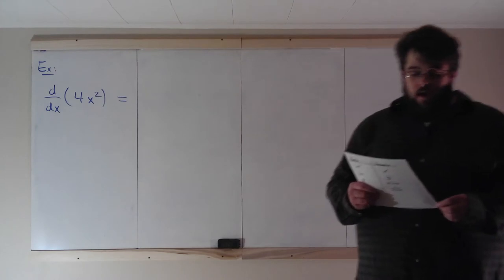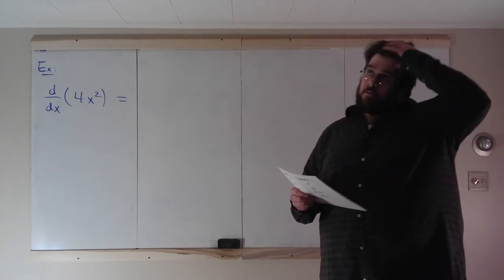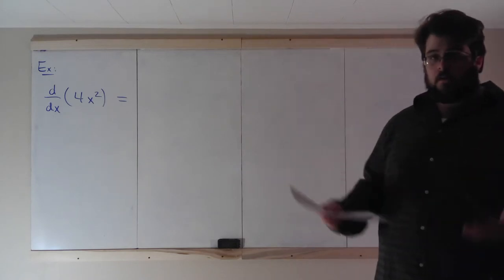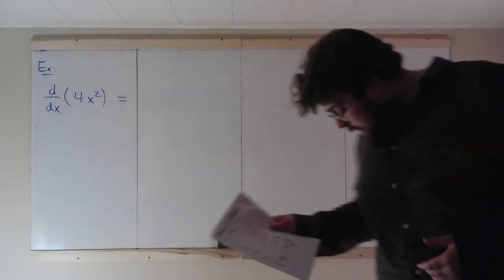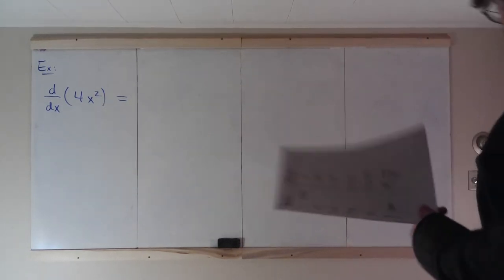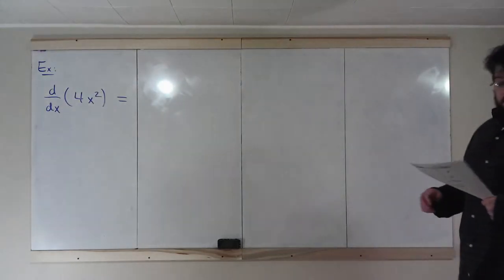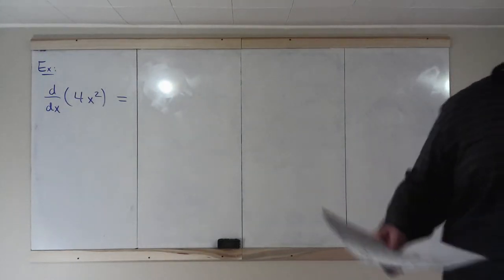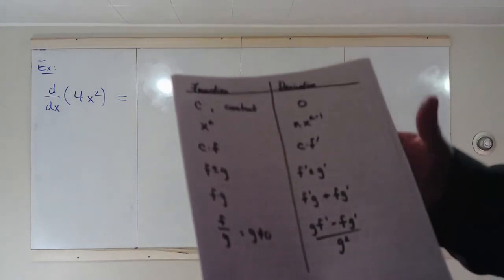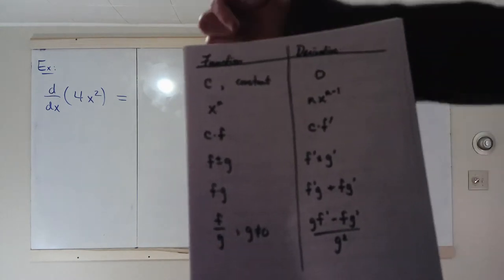On Canvas, there's a document called derivative rules. It's three pages, and it has a list of functions and their corresponding derivatives. I'm going to talk about each of them by the camera. If you open that document, you'll be able to follow along in case this does not come out clearly. So on the first page, we have functions and derivatives.